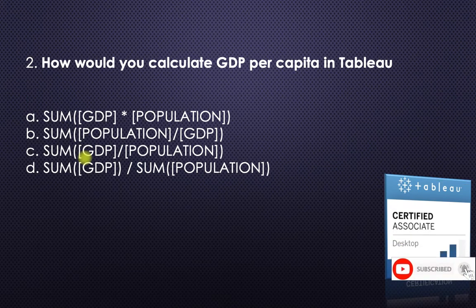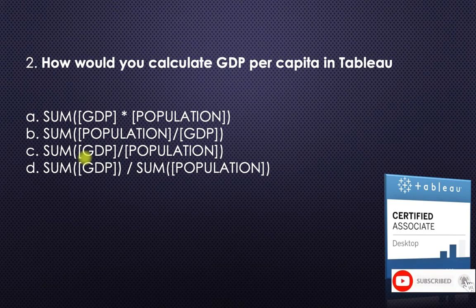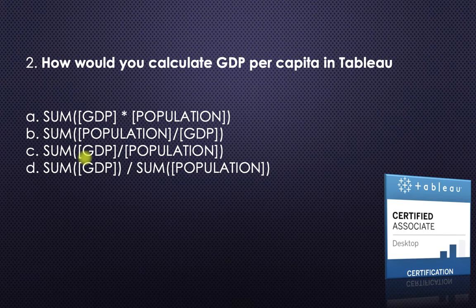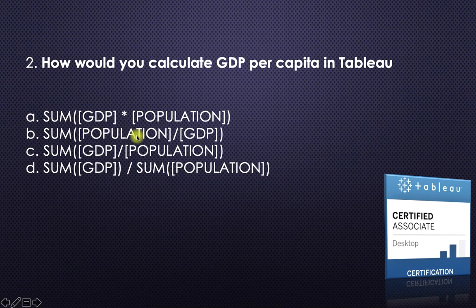The next question: how would you calculate GDP per capita in Tableau? GDP per capita would involve a GDP column and a population column in your database. It would be summing up the GDP values and dividing by summing up the population values. The first and second options are wrong because the second calculates row by row and then sums, which is the wrong method.